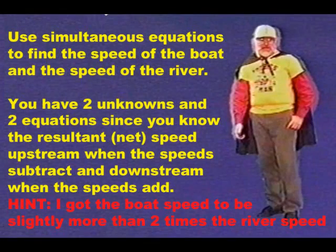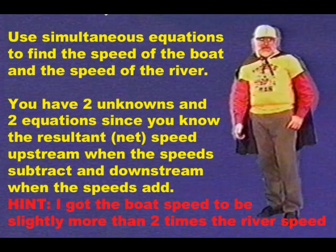Now using simultaneous equations to find the speed of the boat and the speed of the river, you have two unknowns and two equations, since you know the resultant speed upstream when the speeds subtract, and downstream when the speeds add. I got that the boat speed was a little more than two times the river speed.